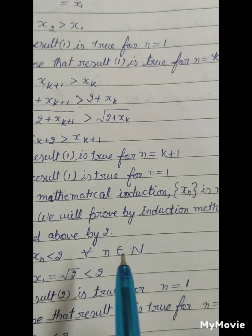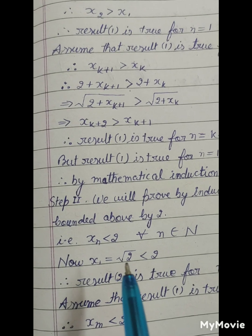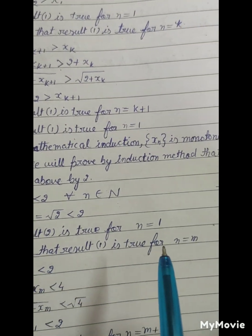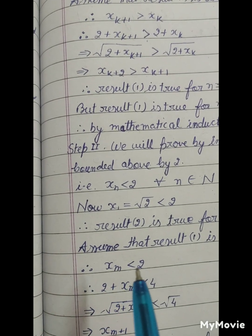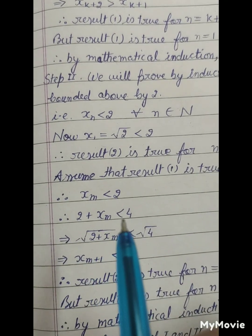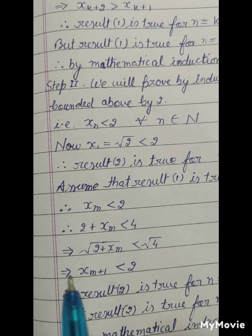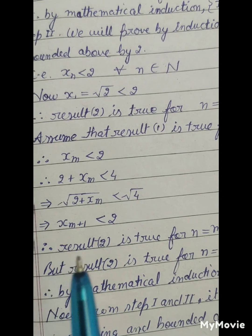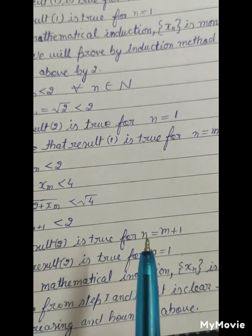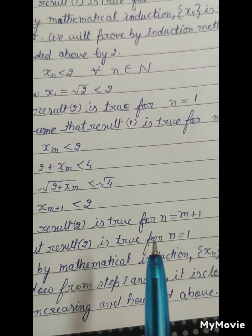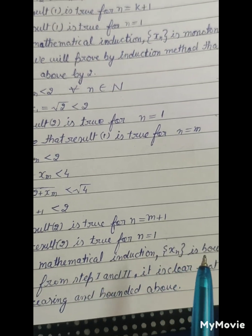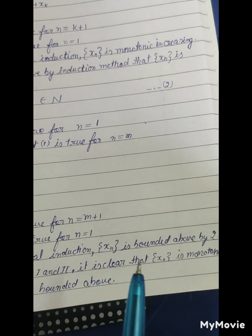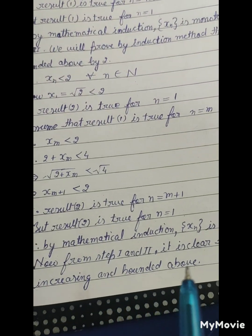Step 2: We will prove by induction that xn is bounded above by 2, that is xn is less than 2 for all n in N. Now x1 equals square root of 2, which is less than 2, so the result is true for n equals 1. Assuming the result is true for n equals m, so xm is less than 2, then 2 plus xm is less than 4, which implies square root of 2 plus xm is less than 2, which implies xm+1 is less than 2. So by mathematical induction xn is bounded above by 2. From Step 1 and Step 2, xn is monotonically increasing and bounded above.